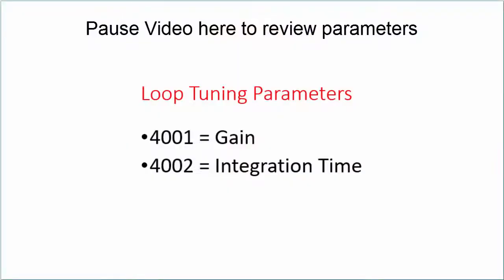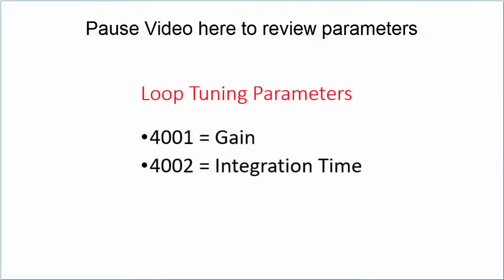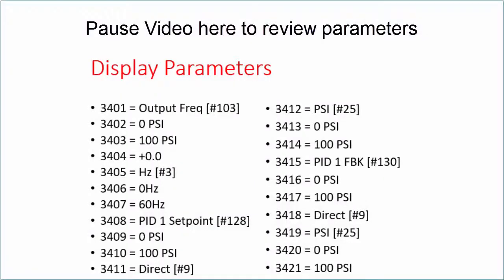These parameters are responsible for configuring the drive's control location and assigning the speed reference function to the internal PI controller. These parameters are responsible for tuning the PI loop itself and will dictate how quickly the drive will accelerate and how responsive to changes the drive's output will be. These values are entered in a trial and error fashion and may need to be repeatedly adjusted to achieve the desired response from the drive's PI controller.